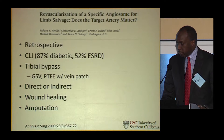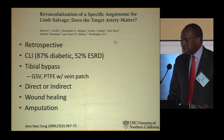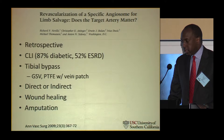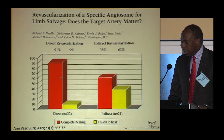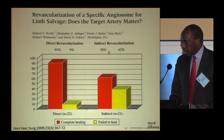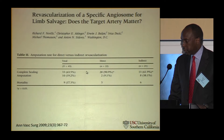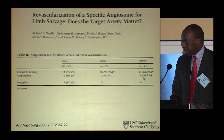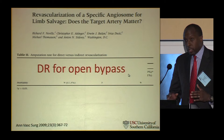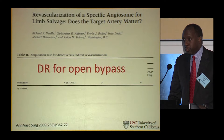The first paper really addressing the angiosome concept was by Dr. Neville and Dr. Attinger out of Washington, D.C. It was a retrospective study, mostly diabetics, with a large percentage of end-stage renal disease, looking at direct versus indirect bypasses. A very large percentage had PTFE bypasses. Those with direct revascularization healed their wounds much more frequently — 62% healing for those without direct revascularization. Only 2 amputations in the direct group versus 8 in the indirect, so they concluded direct revascularization to the angiosome is beneficial for open bypass.